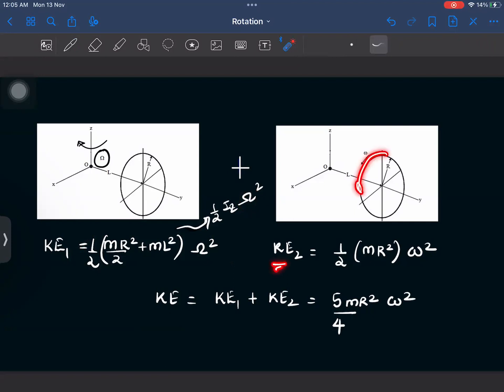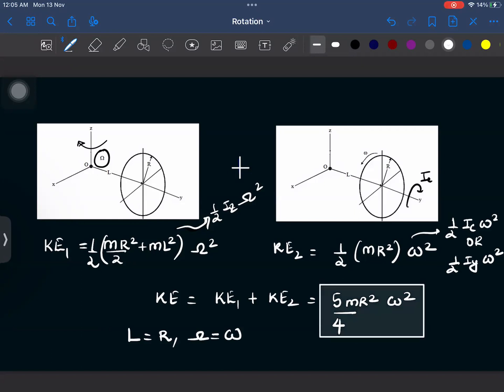Now, in this second motion, that is this spin, this spin is happening about this axis. And for this rotation, we can write down that KE2 will be half MR square omega square. If I take the moment of inertia about this axis is IC, so this is nothing but half IC omega square. So if we add these two terms and we use this condition that is L is equal to R and both the omegas are same because it is given in the equation, we get the answer 5 by 4 MR square omega square.